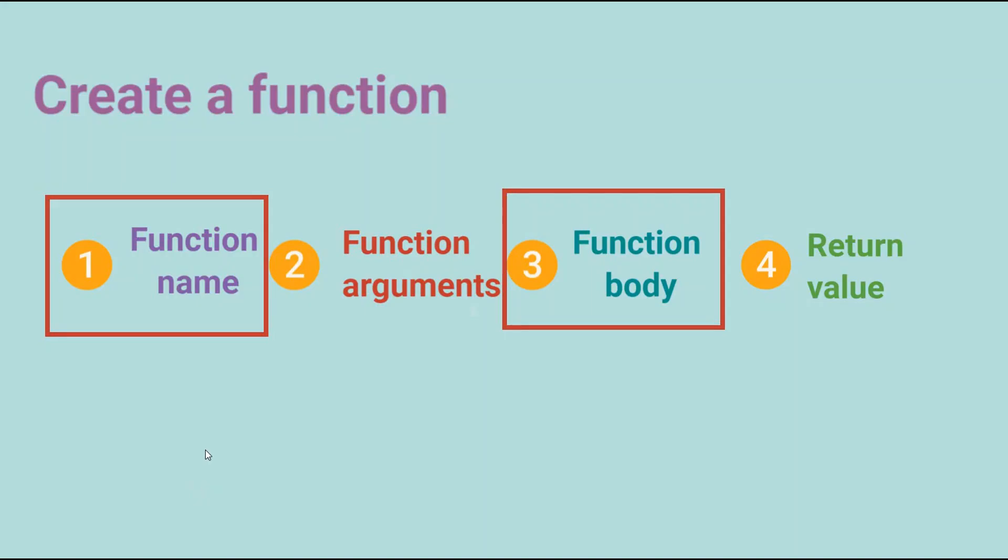To create a function, we need to have two essential components: function name and function body. Function name is to name the function so you can recall it later. For function body, it's where you write your instruction, what you want to do when you call that function. So sometimes you need to have inputs, so you will have function arguments, and sometimes your function will return a value and sometimes it won't. So if you want to return a value, you can add it in your function.